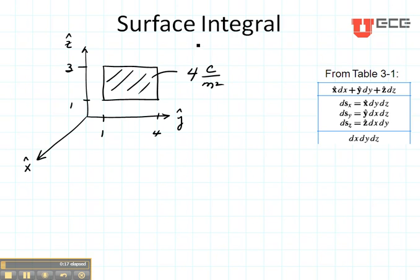The way you could do this manually is you would take the charge density and multiply it by the area of the plate, which we can see is two by three meters. So you take four coulombs per meter squared, multiply it by six, and you get 24 coulombs on this plate.